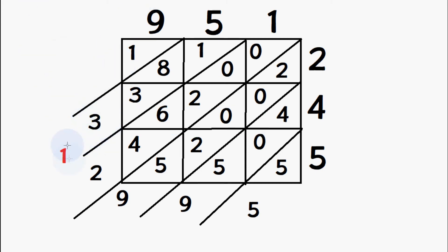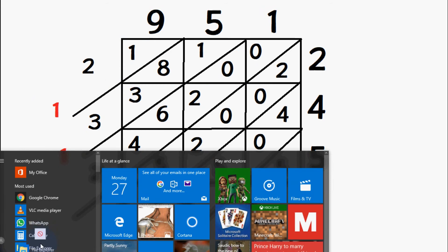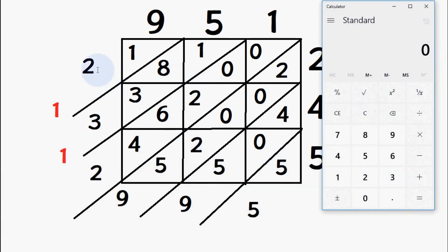And then finally we have just the 1 on its own, so we add the 1 which we carried forward, so that's 2. So our answer is 232,995.